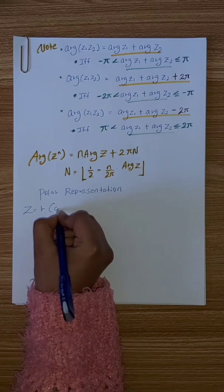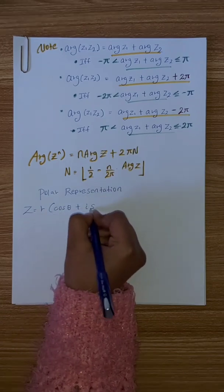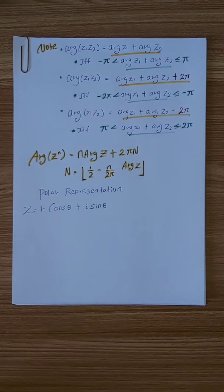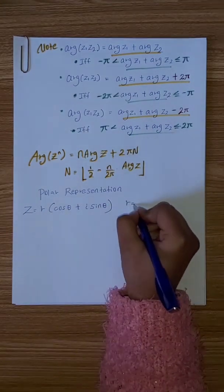The complex number in polar form is represented as r times cosine theta plus i sine theta.